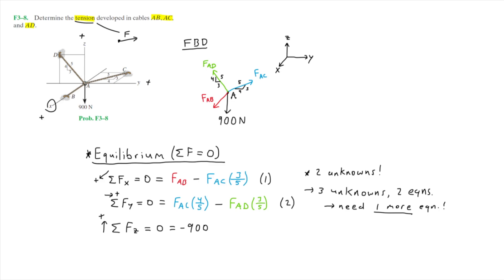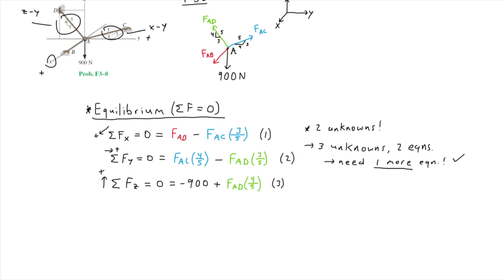Right off the bat we see that the 900 newton force points directly downwards, which is negative, giving us negative 900 newtons. Force AD has a component along the z direction pointing in the positive z direction, so this will be plus FAD times four over five. These are the only two forces along the z direction, completing our third equation. With three equations and three unknowns, we are now ready to solve.